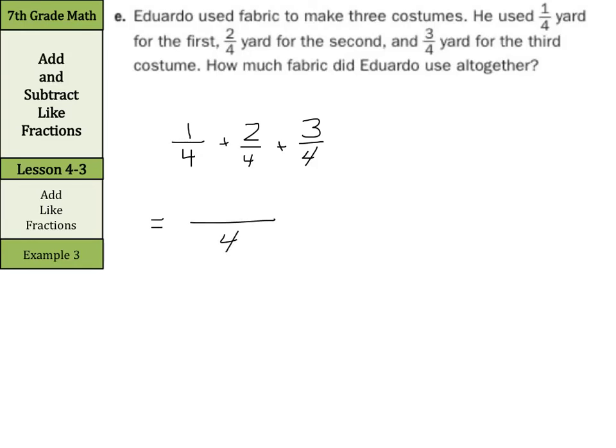We have 1 fourth plus 2 fourths plus 3 fourths. All right. Well, our bottom here is 4. Our denominator is 4. And for our numerator, we're going to add 1 plus 2 plus 3. Easy as 1, 2, 3. 1 plus 2 is 3. Plus 3 is 6 over 4.